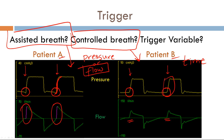On Puritan Bennett ventilators, on the top left with each breath, you will see either 'A' for assisted or 'C' for controlled breath. That's it for trigger variables. Join us for the next video where we talk about the target variable. Thank you.